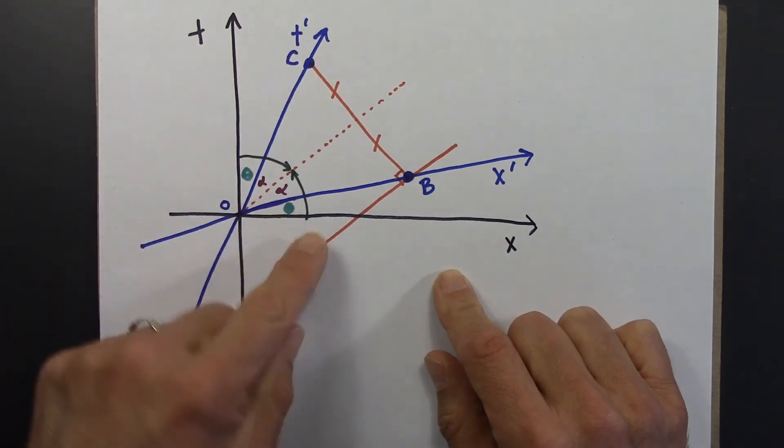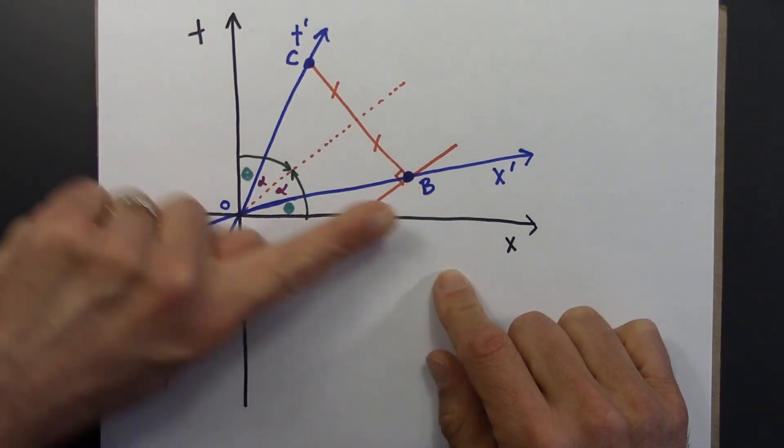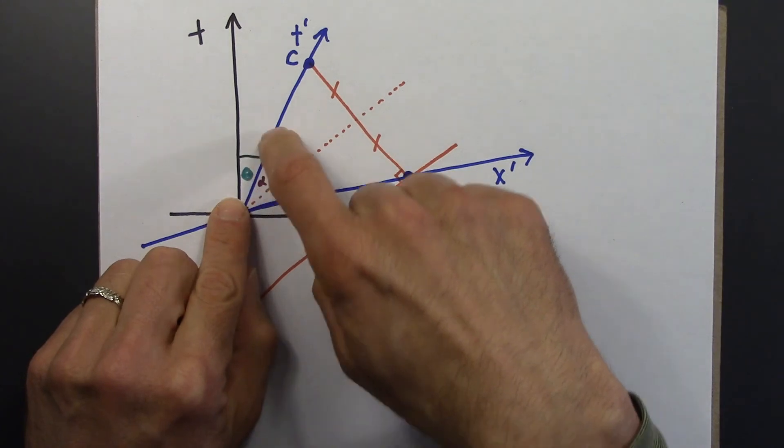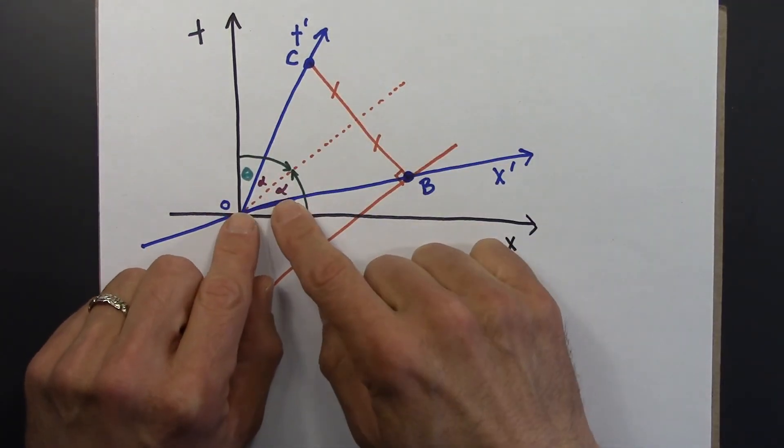We draw a line 1 over beta with a slope 1 over beta. We know how to make the blue x. That's with a slope of beta. And we know how to put out the time and space markings here. It's just rescaled by the factor of gamma.